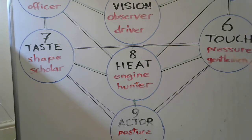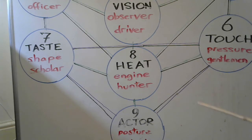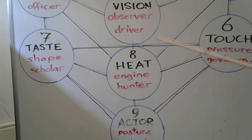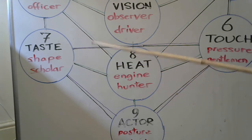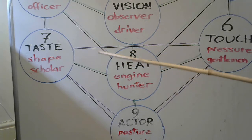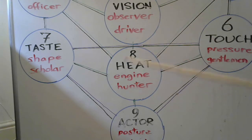49 and 50 — supply and demand energy. 49 is demand, 50 is supply. 51 and 52: 51 is moving the object, 52 is the object still. 53 and 54: 53 is the shape, 54 is the catalogue of those shapes. 53 is the scholar, the knowledge of all those shapes.